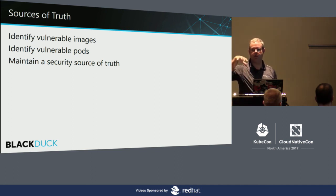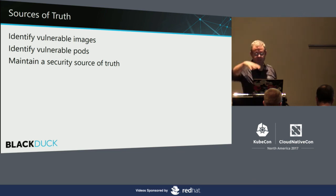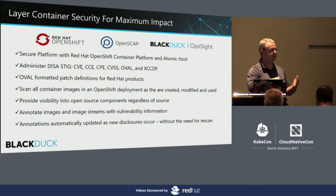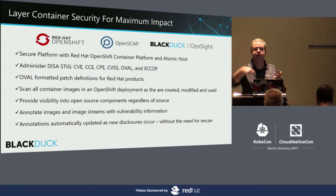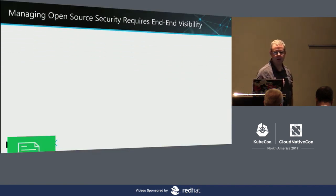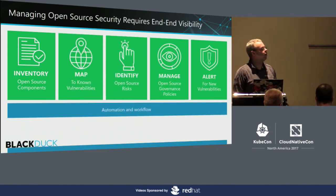Fundamentally it's a case of sources of truth — identifying where things are and maintaining a security source of truth. We're not the only source of truth; static analysis tools and fuzzing tools need to become sources of truth too. That might be some of what we see from Grafeas over time, though today it's still very much more of a spec than anything else. Layer the container security pieces in place: in an OpenShift environment you've got a locked-down host running a minimal Linux, something called OpenSCAP that can assess the policy and security state of that host, and with us you can look at every single container image, see what the open source risk is, and bring that all back automatically — no human interaction required. Everything requires end-to-end visibility; otherwise things fall through the gaps.